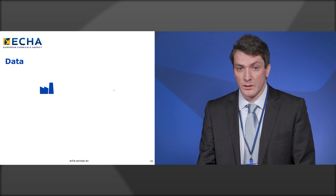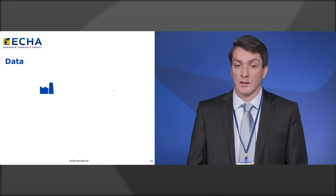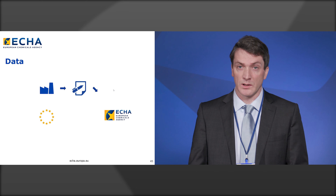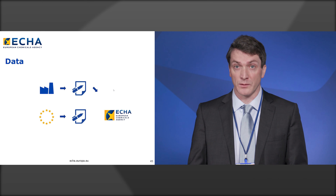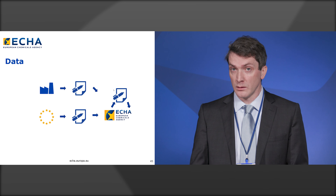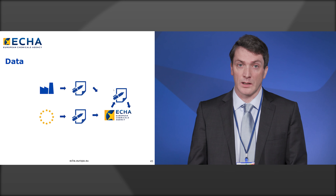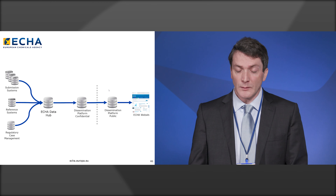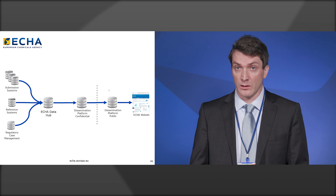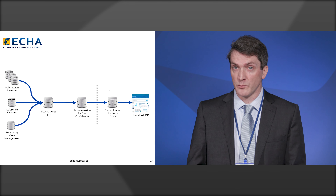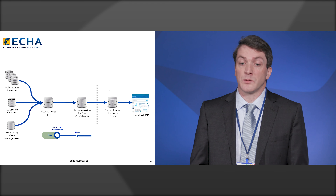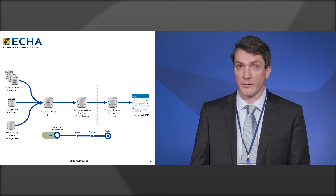As a general approach, under the legislations that ECHA is managing, industry will submit data to ECHA. In addition, the Commission and Member States will also submit data for their regulatory processes, and through our own work we also generate quite a lot of data ourselves. All of this data is made available on the ECHA website as much as possible. It feeds into the ECHA data hub, goes to the dissemination platform where confidential information is removed, where it's processed and prepared for publication, and then pushed live on the ECHA website.